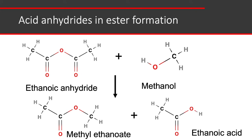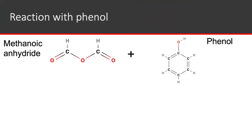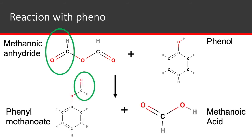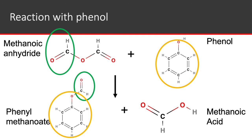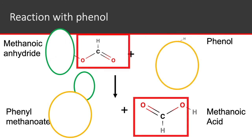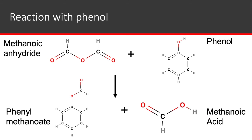Now let's see how it reacts with phenol to form esters. We start with methanoic anhydride and phenol, and they combine together to produce phenyl methanoate and methanoic acid. Circled in green is the part that comes from methanoic anhydride — that's C double bond O — and in orange is the part of the molecule that comes from phenol, giving us overall phenyl methanoate. The rest left over forms our methanoic acid: the methanoate part from methanoic anhydride and the H from phenol. And that's the overall equation.